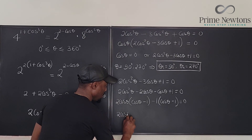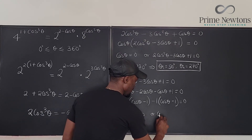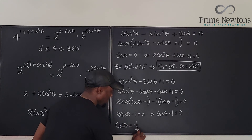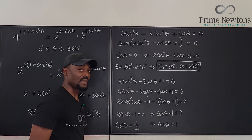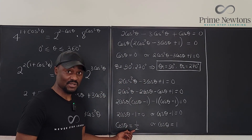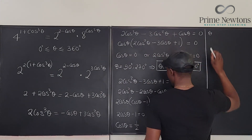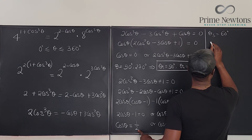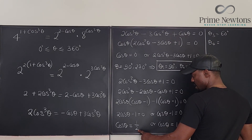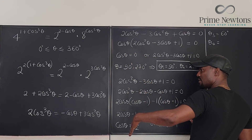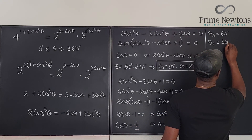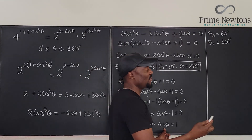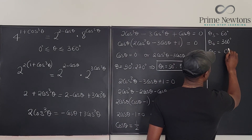This factors to (2 cosine θ minus 1)(cosine θ minus 1) = 0, giving cosine θ = 1/2 or cosine θ = 1. For cosine θ = 1/2, since cosine is positive that gives θ₃ = 60° and θ₄ = 300°. For cosine θ = 1, that occurs at 0° or 360°, so θ₅ = 0° and θ₆ = 360°.